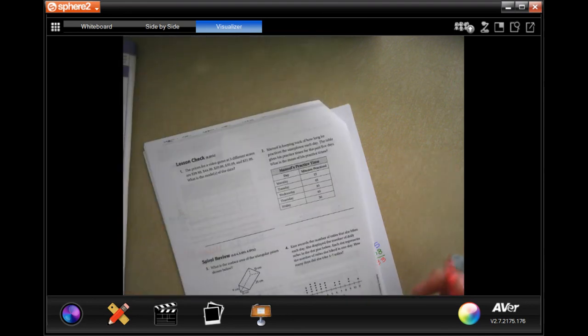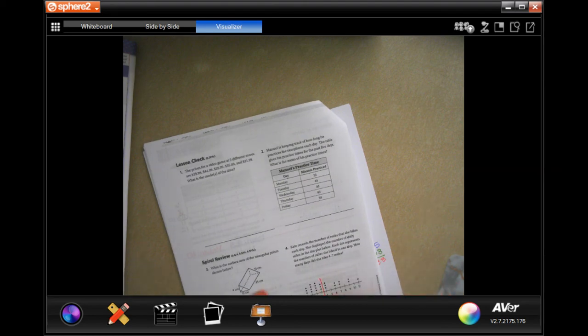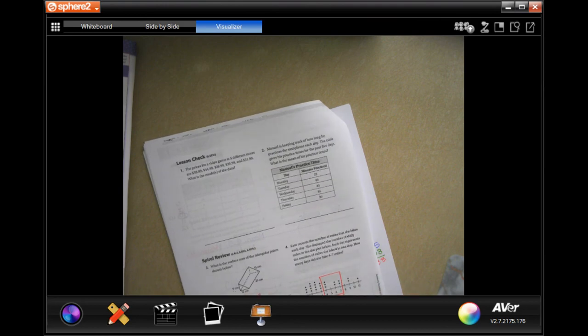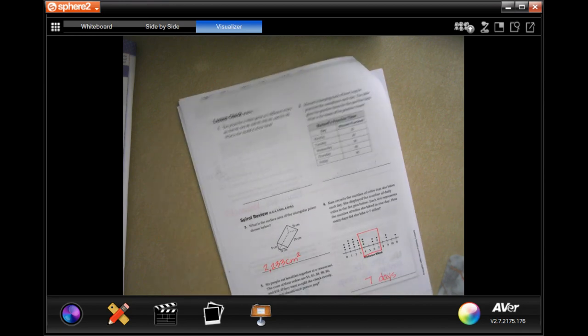I'm going to go down and do number 4. It says, Kate records the number of miles that she bikes each day. She displayed the number of daily miles on the dot plot below. Each dot represents the number of miles she biked in one day. How many days did she bike 4 to 7 miles? So, how many dots are there in that box? Well, 3, 4, 5, 6, 7, 7, 8. Oh, we didn't even do number 5. Sorry about that, y'all.